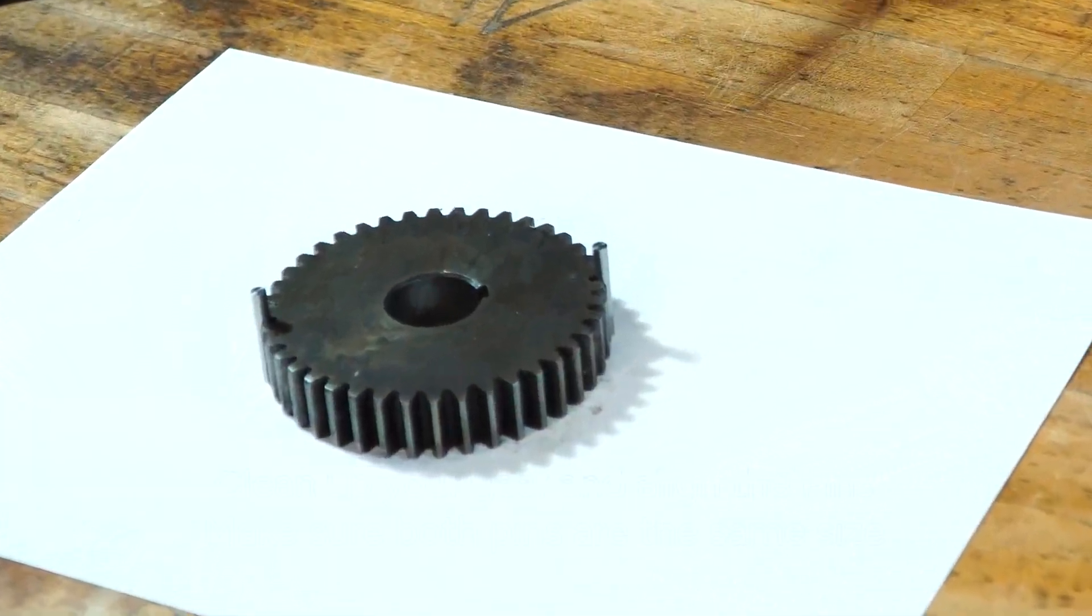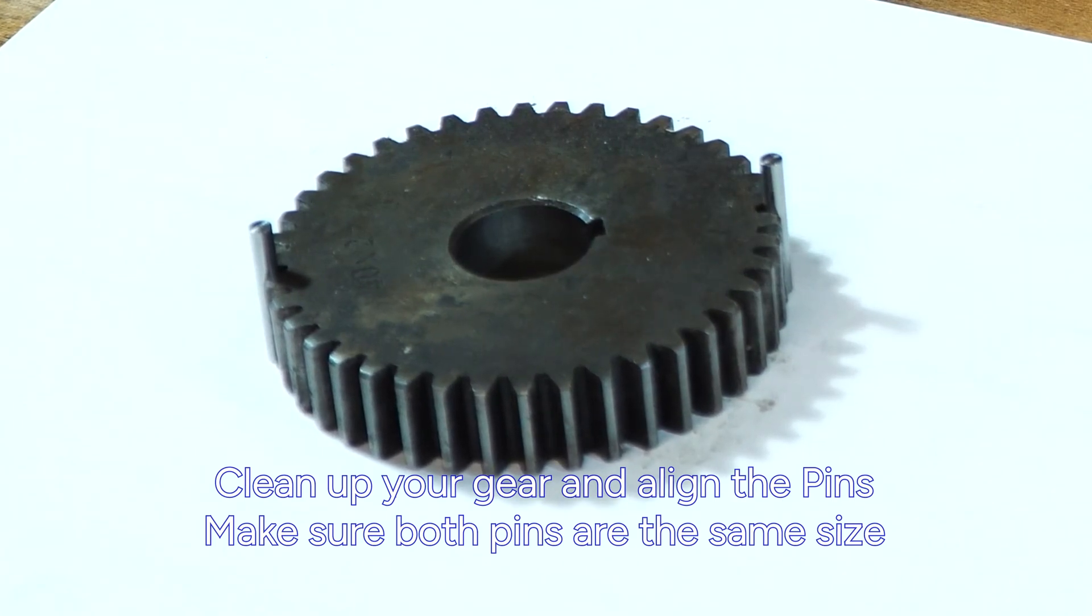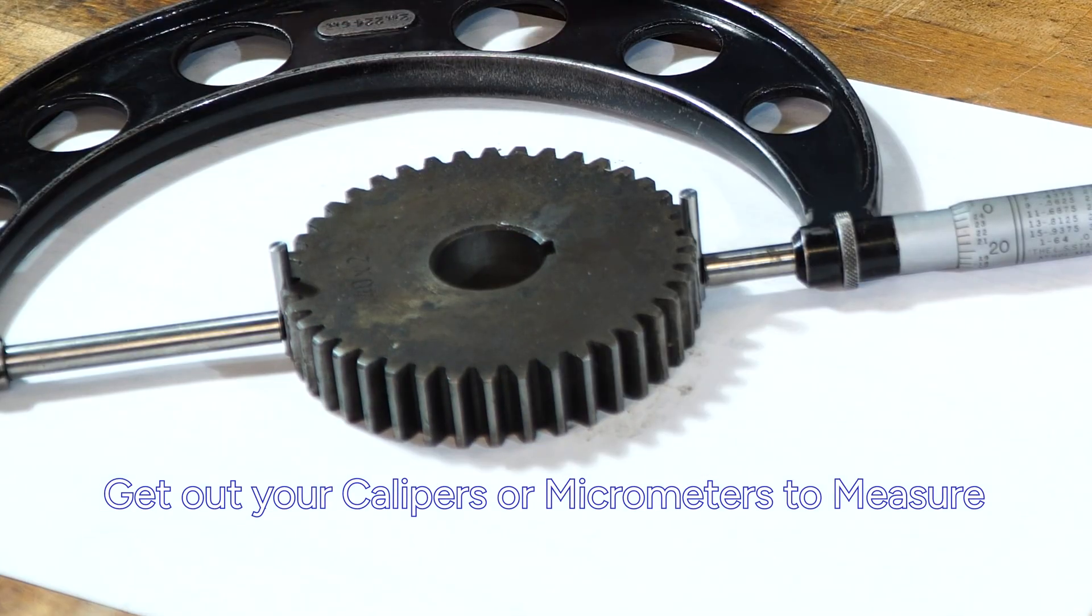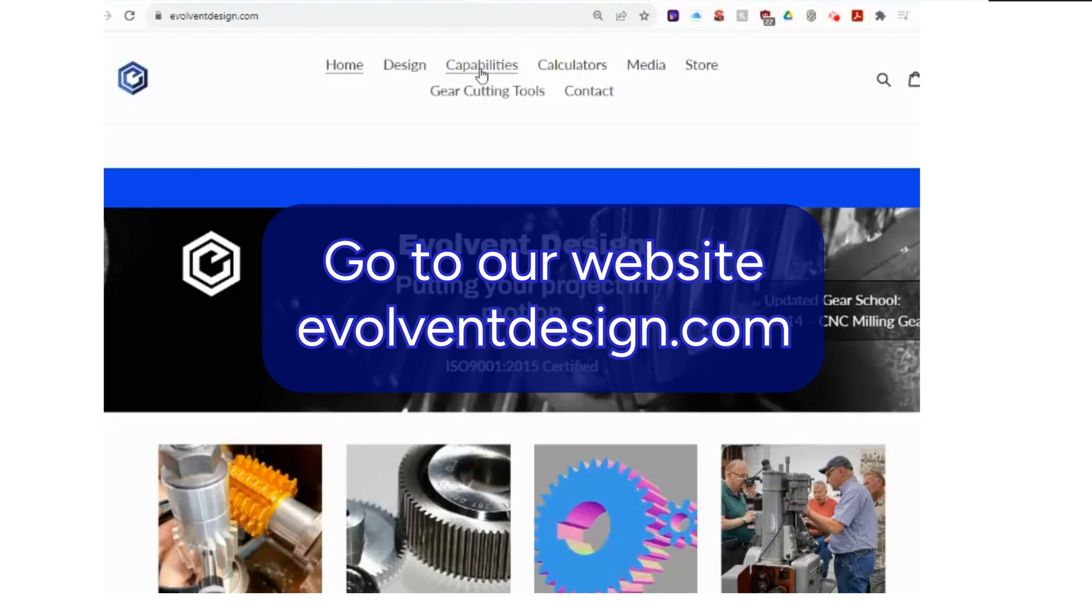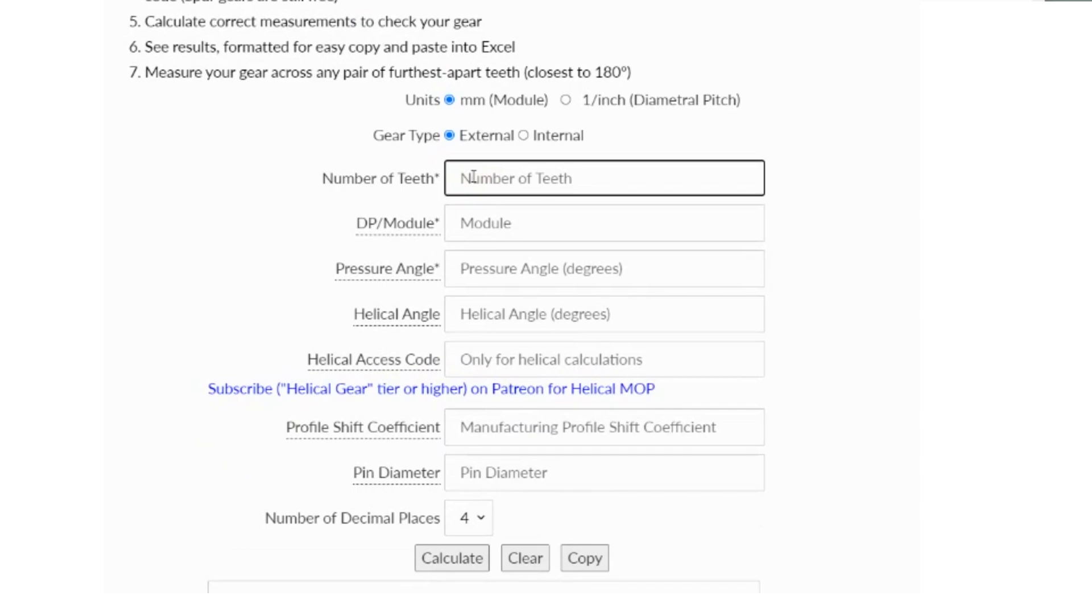So you probably have pins in your shop. Lay your gear out. Clean it up. Get the pins stuck in opposing teeth like we talked about. Even or odd. Get out your calipers. Go to our website. Go to our gear hub calculator. Go to measurement over pins calculator.